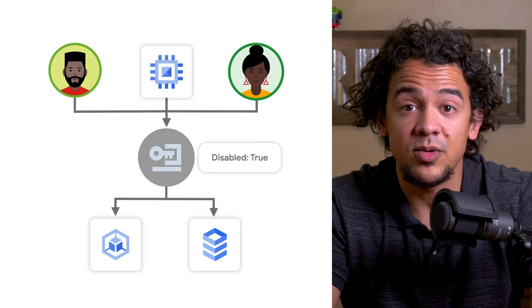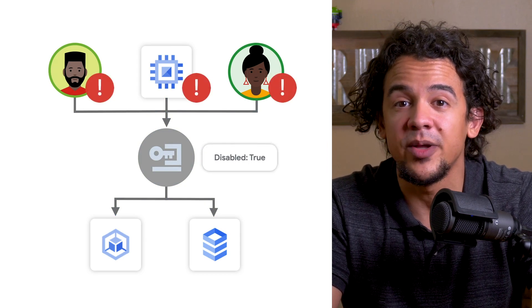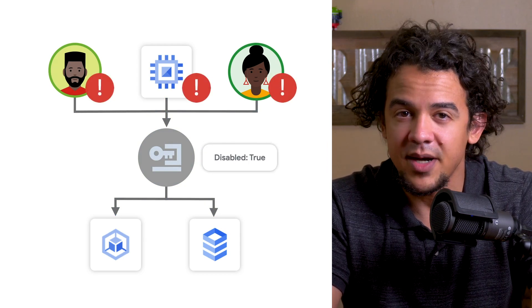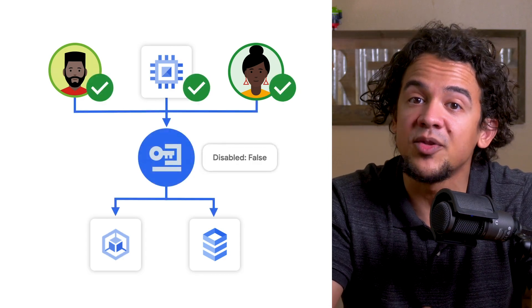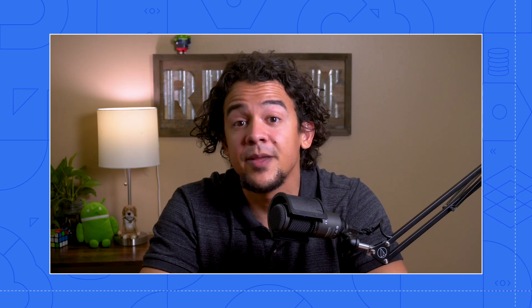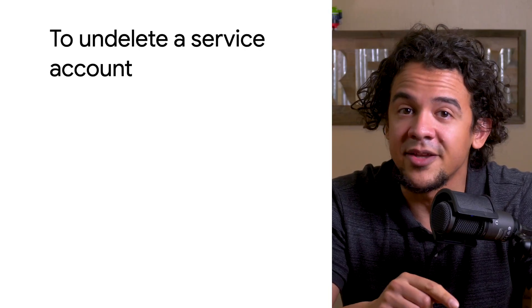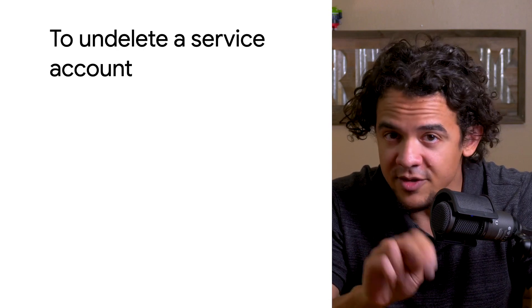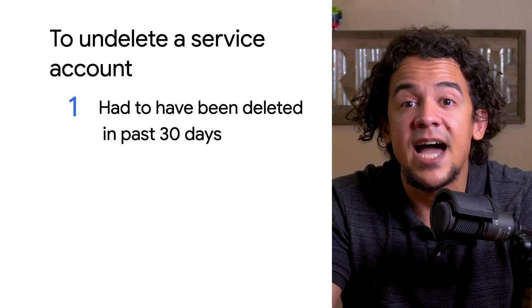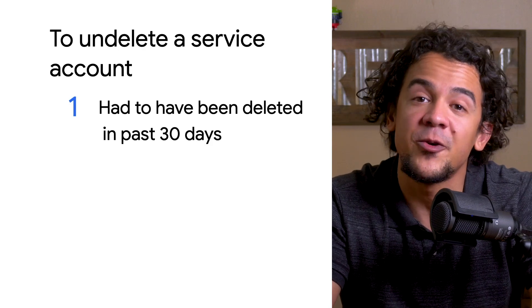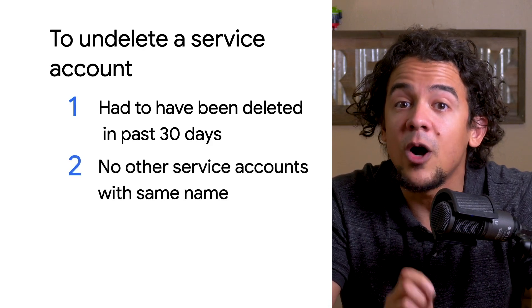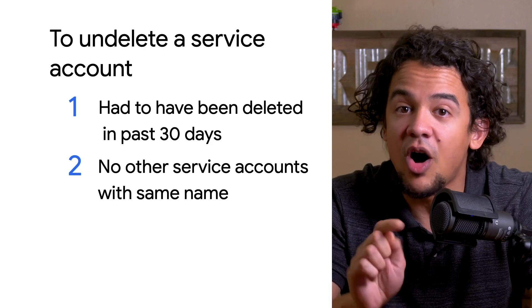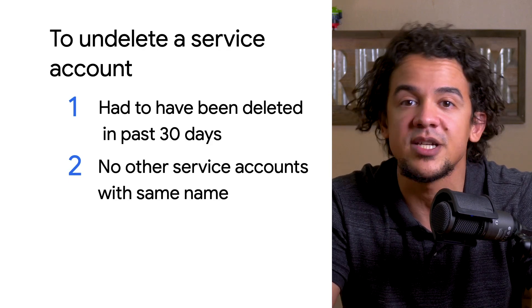Once an account is disabled, applications will lose the access they had through it — just like when you delete it. But a disabled service account can easily be re-enabled at any time. Does that mean that when you delete a service account it's completely, totally, utterly, and hopelessly lost forever? No, not exactly. You could undelete a deleted service account, but only if two things are true. One, the service account had to have been deleted within the past 30 days. And two, there can be no other service accounts in existence on your project with the same name as the deleted service account. That's because disabling a service account will reserve the name, but deleting it will not.